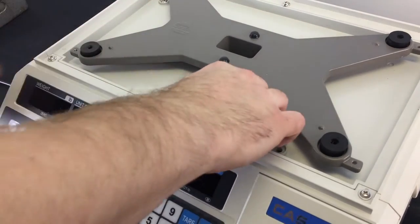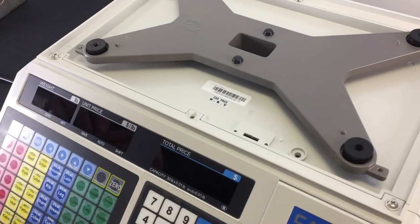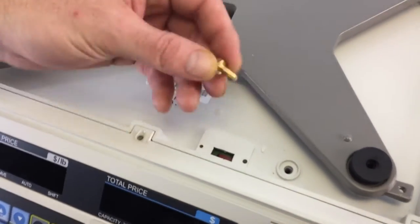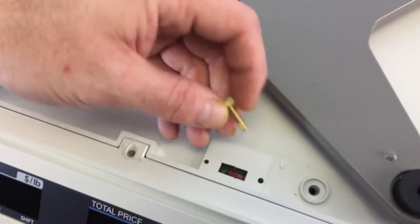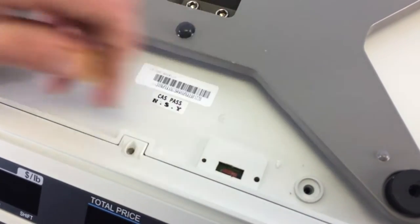Now that we removed the sealing bolts and the calibration plate, we have access to this switch located underneath. We're gonna need something pointy, like a pen, so that we can slide this switch to the left hand side.